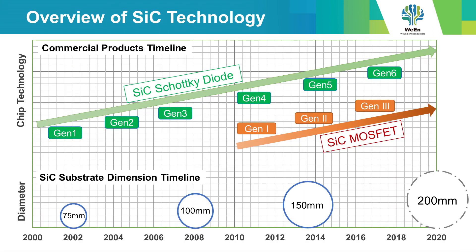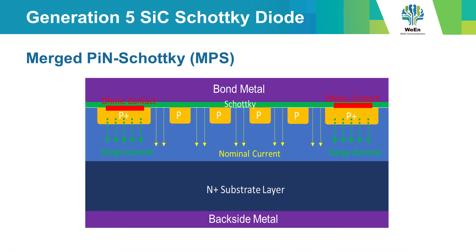Silicon carbide products have been commercially available since about the year 2000. The latest Wien silicon carbide diodes are made in generation 5 and 6, and the first SiC MOSFETs will be made in generation 2 and 3.